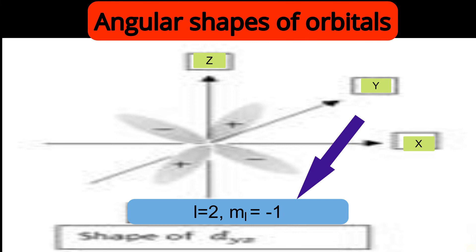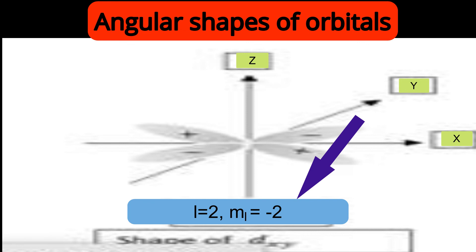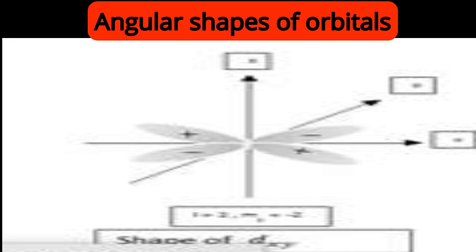For ml=−1, it is the dyz orbital — lobes lying between the y and z axes in the yz-plane. As before, four lobes alternate in sign angularly, with opposite lobes sharing the same wave function. Central symmetry is present. For ml=−2, it is the dxy orbital — lobes between the x and y axes, lying in the xy-plane. Wave function distribution is again plus, minus, plus, minus, with opposite lobes having the same wave function phase and central symmetry.